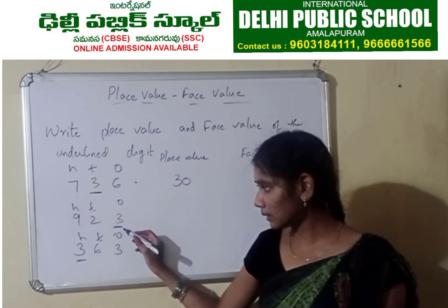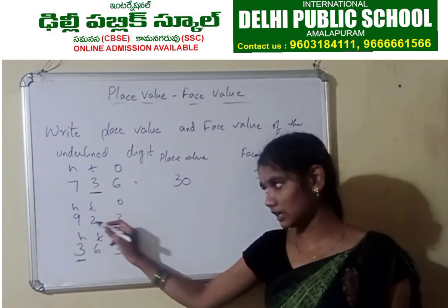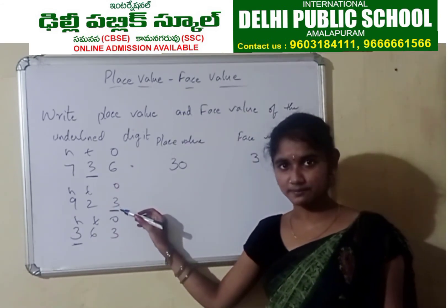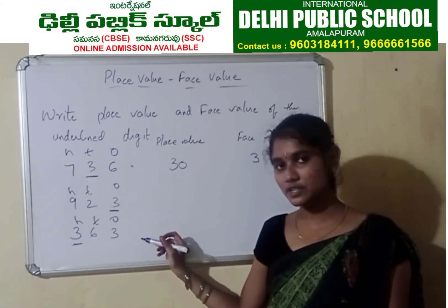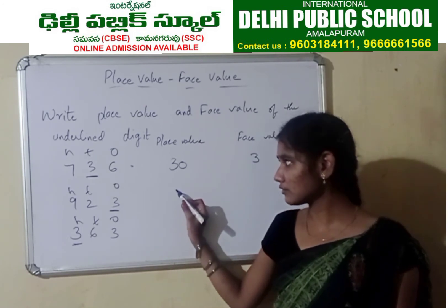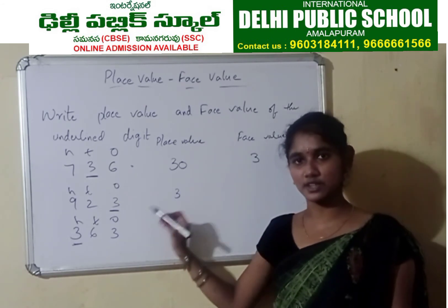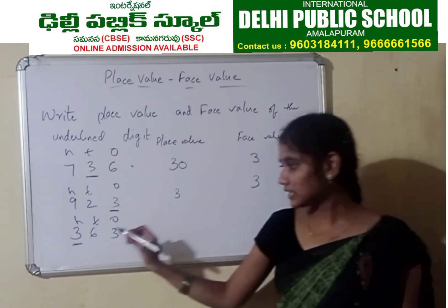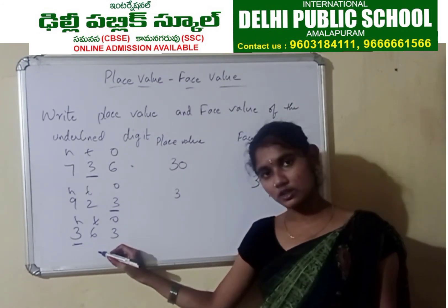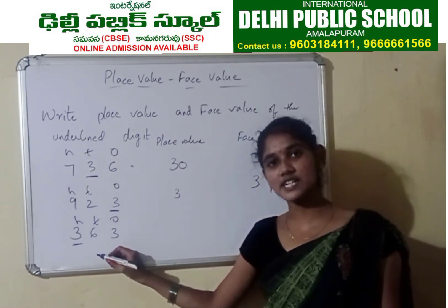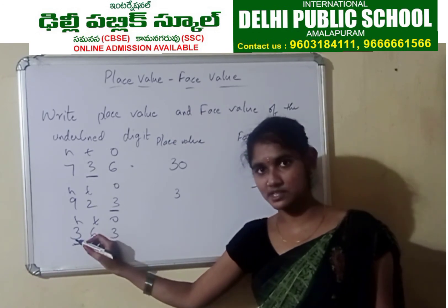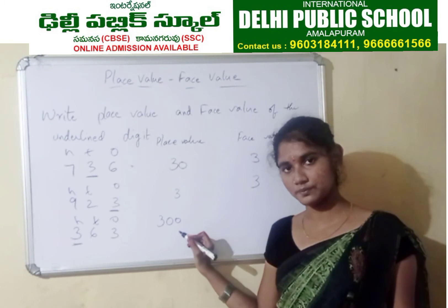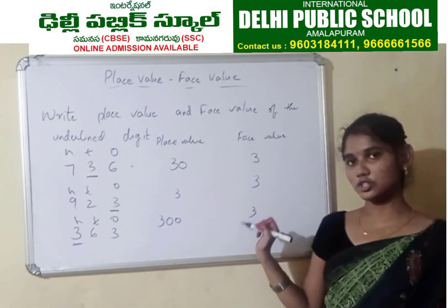Coming to the next number — 923. Here the underlined digit is 3. 3 is in which place? Ones place. So 3 is in ones place, which means the answer is 3 ones — just 3. The face value is also 3 only. Then 363 — here 3 is in hundreds place, so the place value will become 300. But the face value will not change — it remains 3.